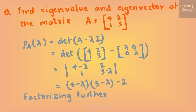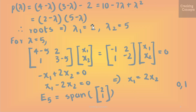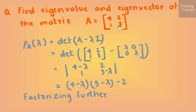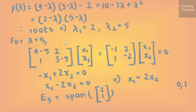Now we look into a problem where we find the eigenvalues and eigenvectors of a 2×2 matrix A. First we will find the characteristic polynomial by taking the determinant of (A − λI). Substituting the values we get this expression. When we factorize it further we find that the roots of this polynomial are 2 and 5. Now since these are the eigenvalues, we need to find the corresponding eigenvectors. Taking lambda = 5 and substituting the values, we get the equation x1 = 2x2.